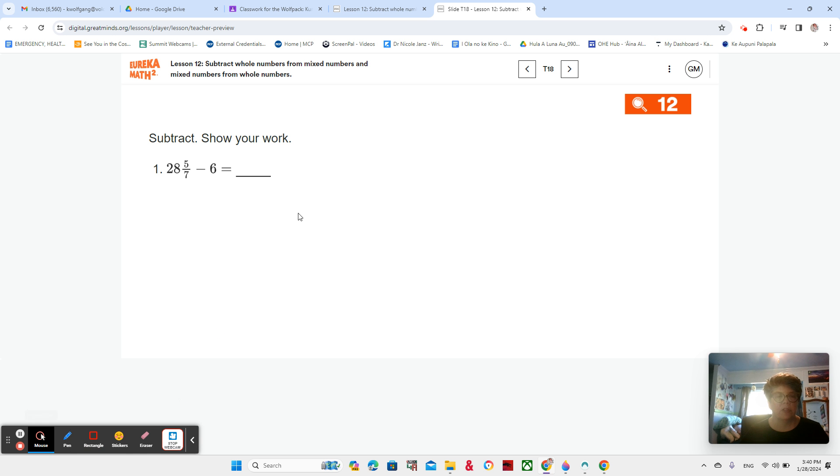Next page. For me, but for you, it's just number 2. 7 minus 3 and 2 sevenths. Now, what do we notice that's different here?